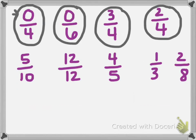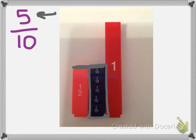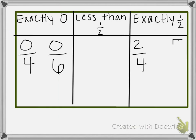The next one we're going to look at is 5 tenths. Here we have 5 tenths, and again we can see that is exactly 1 half. 5 is exactly half of 10, so we're going to put 5 tenths in our table for exactly 1 half. The more you do this, you should start to see some patterns, so keep looking for patterns as you work through different fractions.